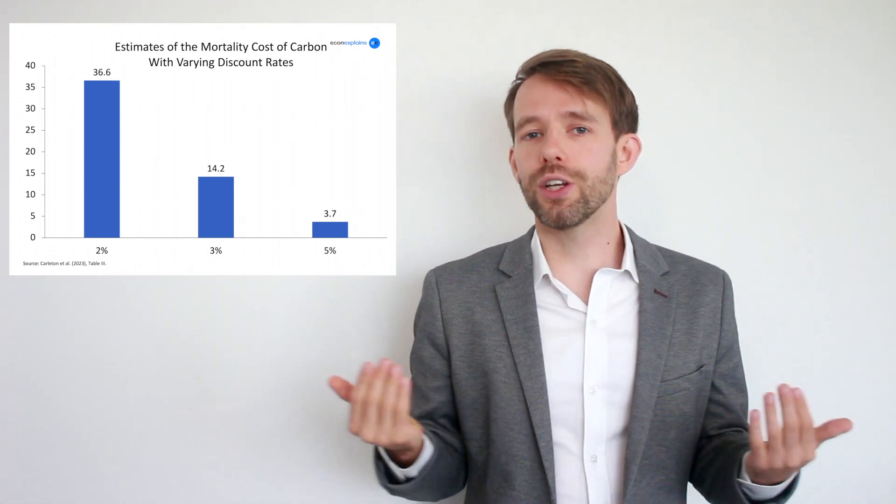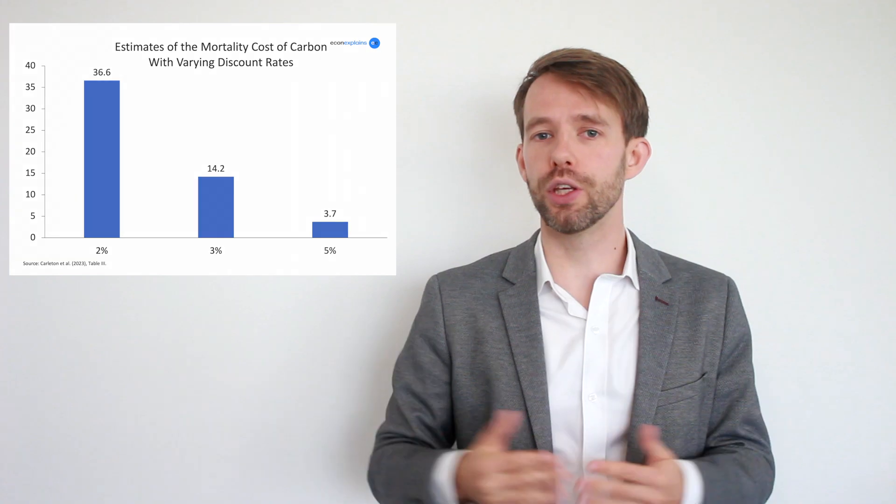So you can see that the discount rate has a massive impact on how we evaluate climate damages, and thus on climate policy. But which discount rate should we use? Around 2010, a discount rate of 3 to 5% was preferred. But in the paper, we advocate for a discount rate of 2%, as this is more in line with recent global capital markets.